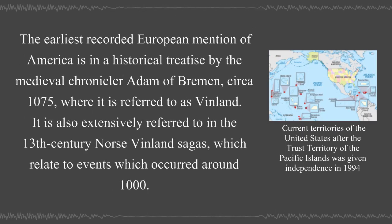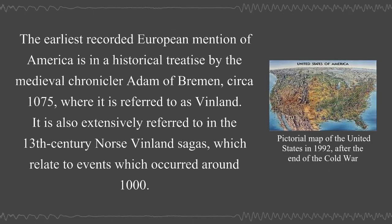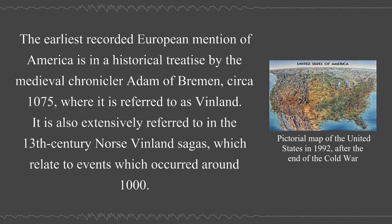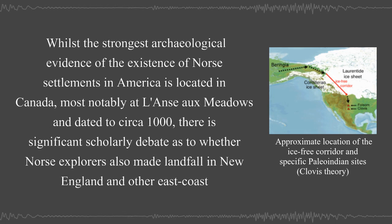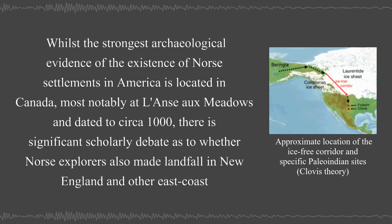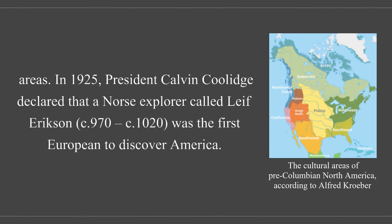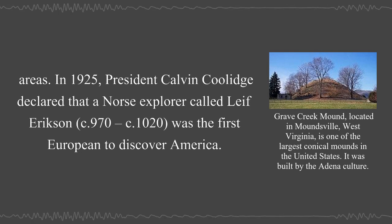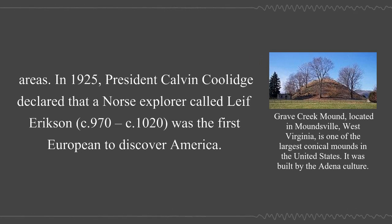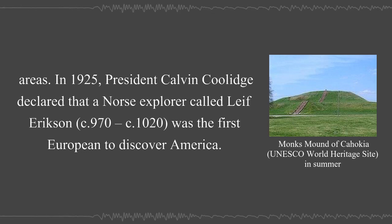The earliest recorded European mention of America is in a historical treatise by the medieval chronicler Adam of Bremen, circa 1075, where it is referred to as Vinland. It is also extensively referred to in the 13th century Norse Vinland sagas, which relate to events that occurred around 1000. While the strongest archaeological evidence of Norse settlements in America is located in Canada, most notably at L'Anse aux Meadows dated to circa 1000, there is significant scholarly debate as to whether Norse explorers also made landfall in New England and other east coast areas. In 1925, President Calvin Coolidge declared that Norse explorer Leif Erikson (c. 970–c. 1020) was the first European to discover America.